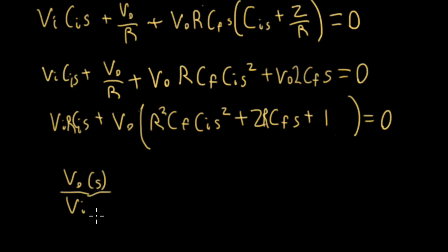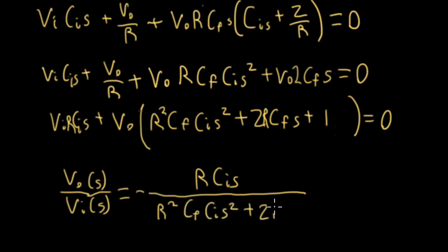I just realized I'm missing some subscripts. There should be an I here and an I here. So I'll divide through and write this as VO over VI, and let me emphasize that these are both functions of our Laplace variable S. That's our transfer function. Let me make sure I indicate we have a minus sign here, when I move this over. So this is an inverting filter configuration. In the numerator, I'll have R, CI, S, and the denominator, I have this mess here, which is R squared, CF, CI, S squared, plus 2R, CF, S, plus 1.